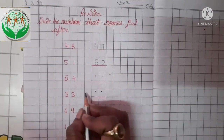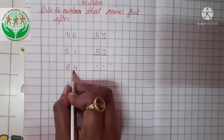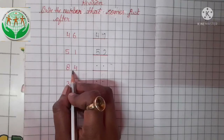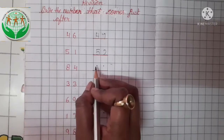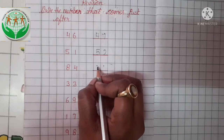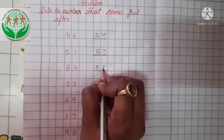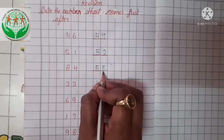Now come to the next one. This is number 84. Now tell me, what comes just after 84? 84 ke after kya aega? Tell me. Yes, 85. So we write here number 85.